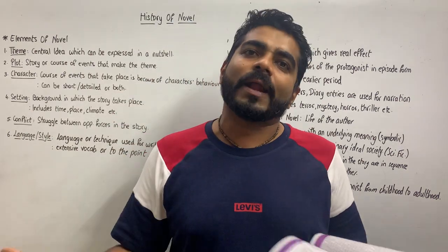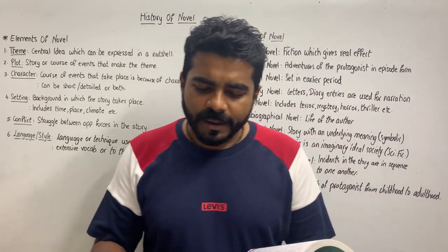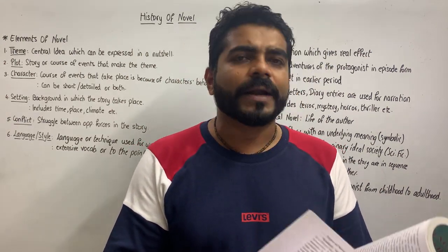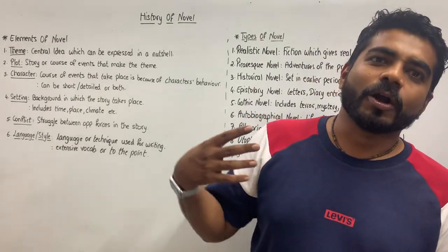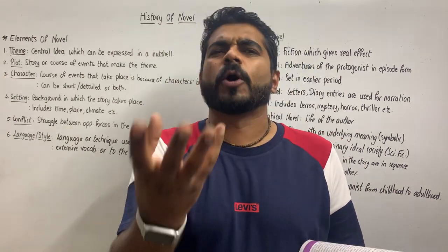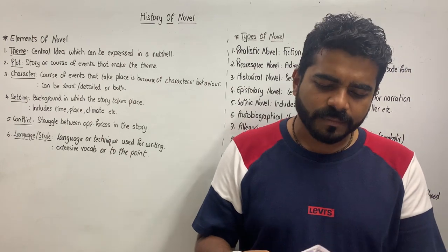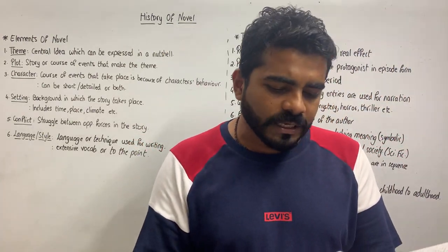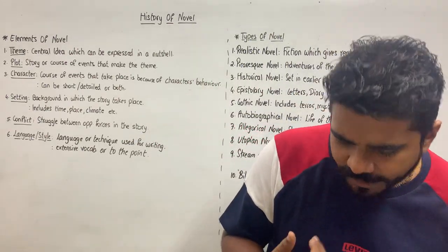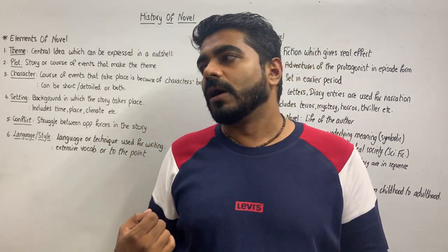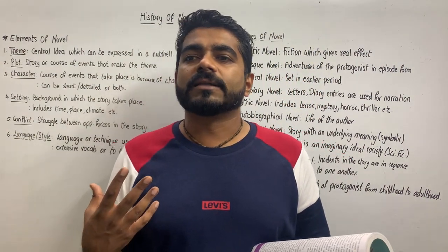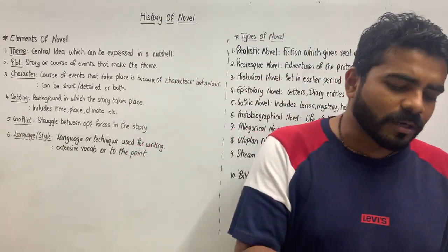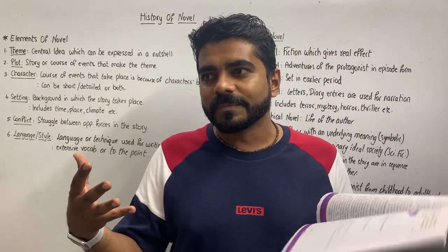The language and techniques used by the author for narrating the course of events is known as style. An author can use extensive vocabulary and high phrases, like Shashi Tharoor, or be laconic and write only to the point. He may use linguistic devices — different kinds of figures of speech — to make the narrative effective. All these factors decide the texture of narration: reading the first three or four pages, you can tell if it will be serious or humorous.